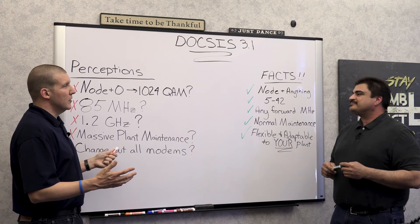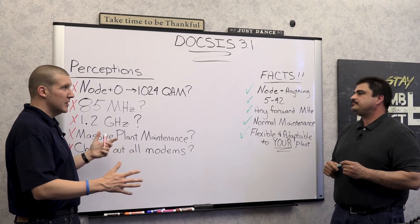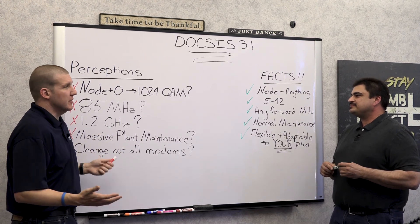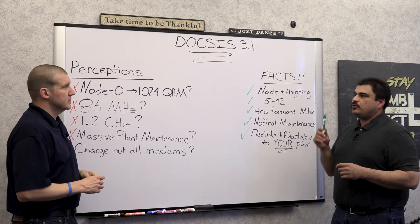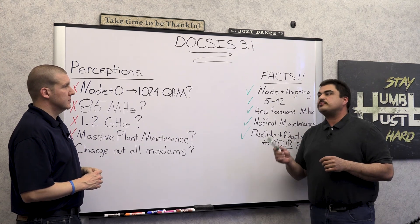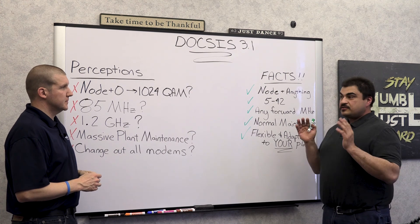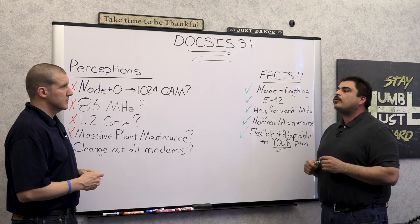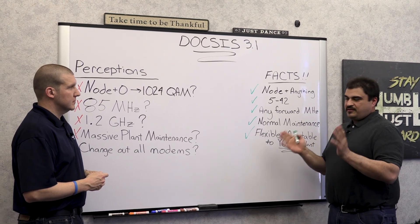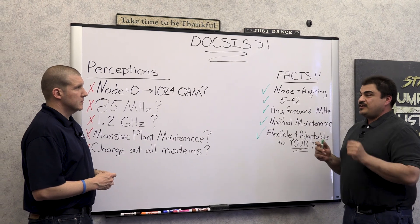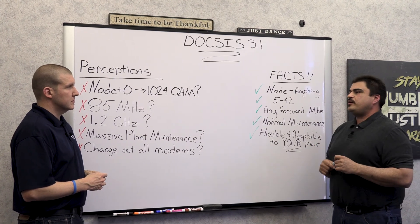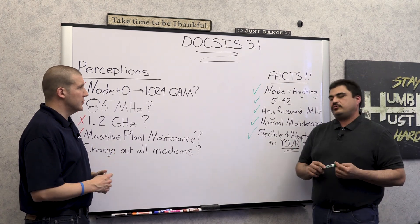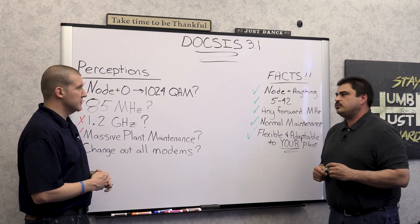What if somebody doesn't have a CMTS that can do 3.1 yet and doesn't want to make that investment before knowing it could work? You can still assess on 3.0 - look at your speeds, watch what 3.0 is supposed to perform at, and when you're not achieving your speeds in test pockets, find out why. If you're supposed to be performing at a gig and only achieving 800, find out why - you'd be surprised how much is plant, headend, or CMTS related. Different types of plant assessments can cover the whole thing.